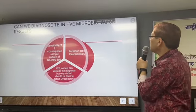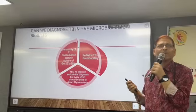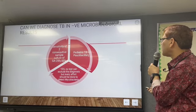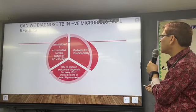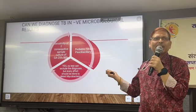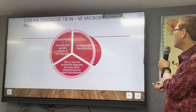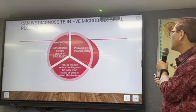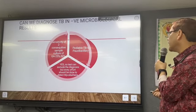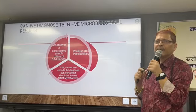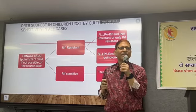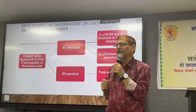Can you diagnose TB if all samples are negative? The sensitivity of two consecutive gastric culture samples is only 25 to 50% in pediatric TB. So yes, we can diagnose TB even if all reports are normal, because no test can exclude the diagnosis. But every effort should be made to detect mycobacteria for the diagnosis of tuberculosis. If we fail and strongly suspect TB, we can diagnose a probable case of tuberculosis in children.